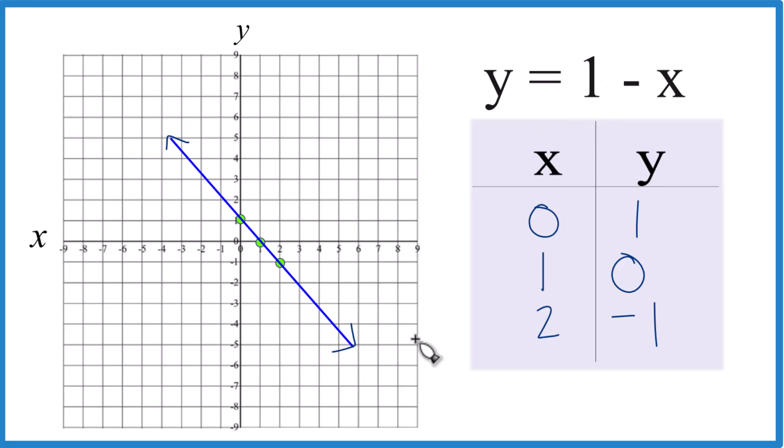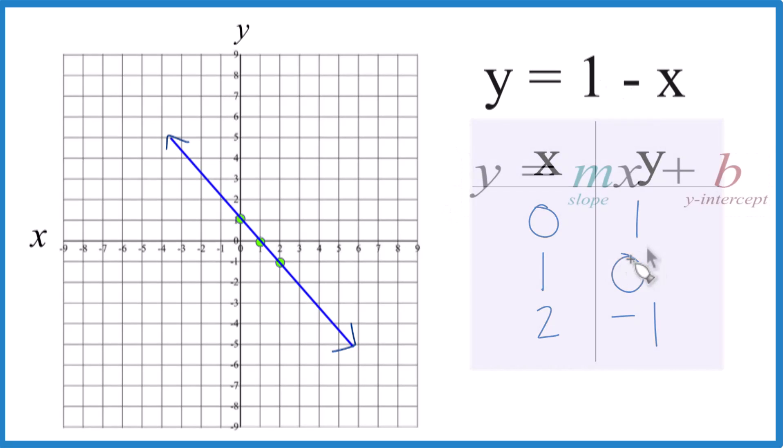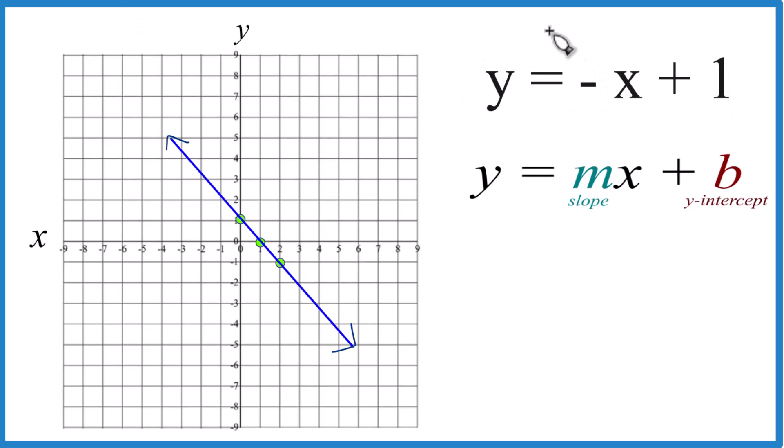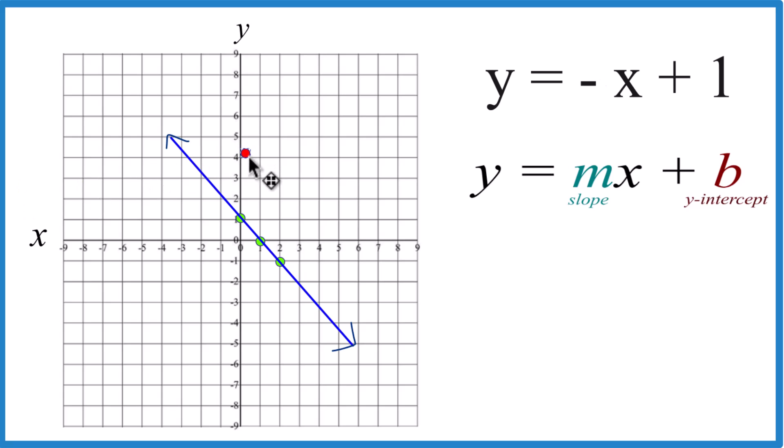Let's try it with slope-intercept form. So I'm going to rearrange this. Right now we have one minus x, but I'd like minus x plus one. Because now we're in slope-intercept form. Y-intercept, that's one. So we go to the y-intercept, and at one, here's the y-axis, at one we put a point.